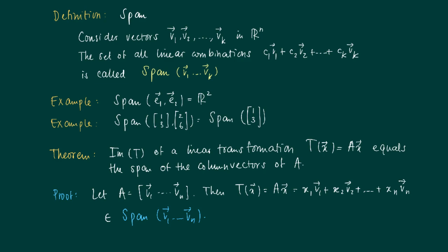And vice versa, we can easily see that the span of these columns belongs to the image of the matrix A, since each column vᵢ is the image of T(eᵢ). T(eᵢ) is mapped on vᵢ.